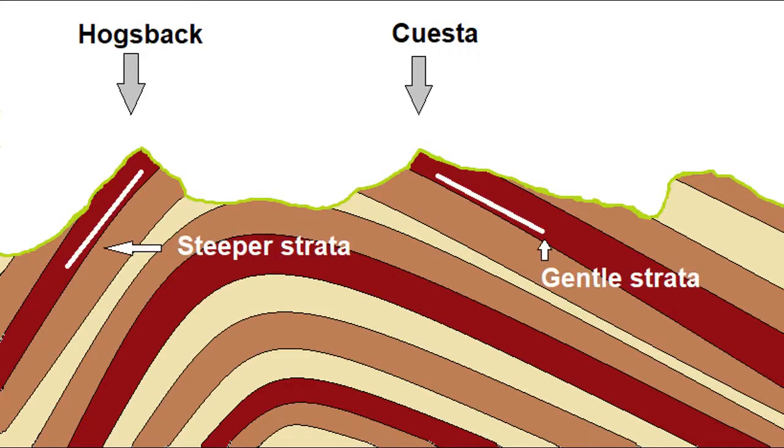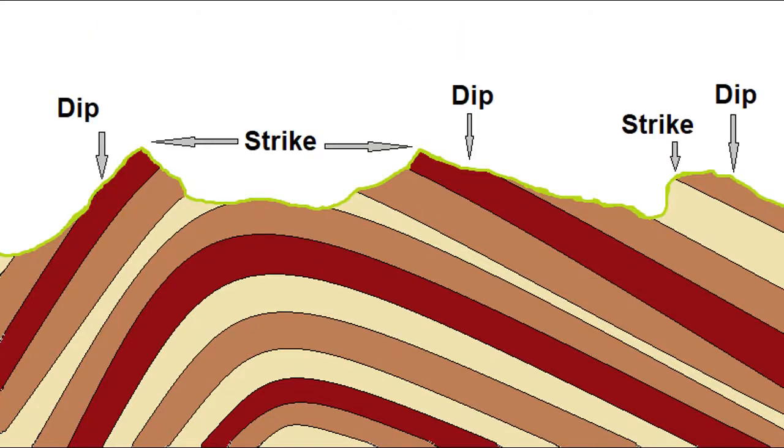What we have here is a hogsback, which is a more steep strata that is causing that formation, and a cuesta, which is slightly more gentle strata. Each of those has a dip slope, which is your long slope, and a strike. The strike isn't a slope—it's that high point which runs the whole way along that mountain range.